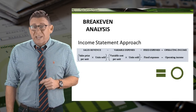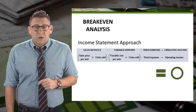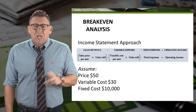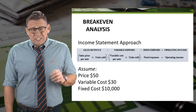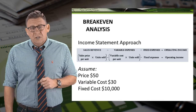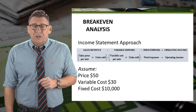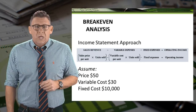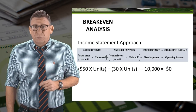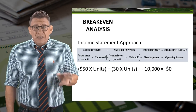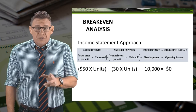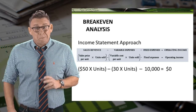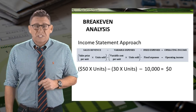Remember that at break-even, operating income is zero, so this equation equals zero. Assuming price is $50, variable cost is $30, and fixed costs are $10,000, we can write this as an algebraic formula: 50 times units sold minus 30 times units sold minus 10,000 equals zero.